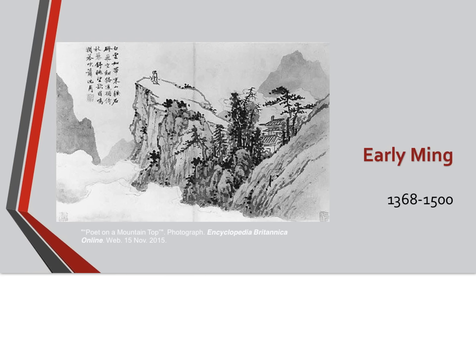We now move to the second part of this lecture, transitioning from Mongol rule under the Yuan dynasty to the early Ming dynasty from 1368 to 1500. We will be covering the later Ming dynasty in a few weeks. This image called 'A Poet on a Mountaintop' shows the relationship between the Chinese people and their environment. You can also see the calligraphy on the left side. Many Chinese artworks are known as landscape paintings, which we'll discuss more when we talk about the Ming dynasty.